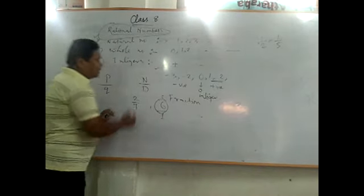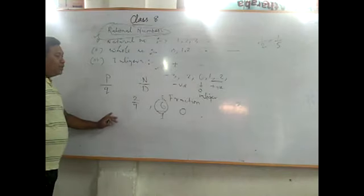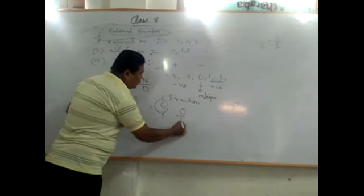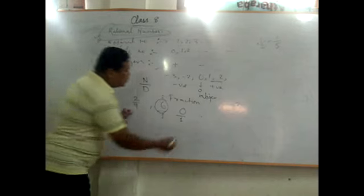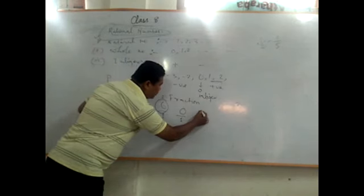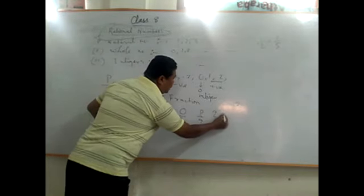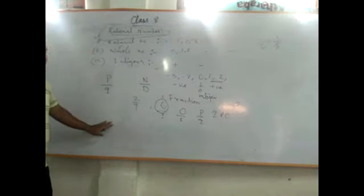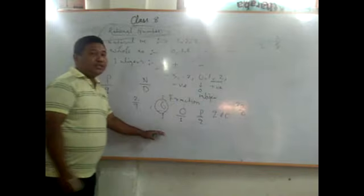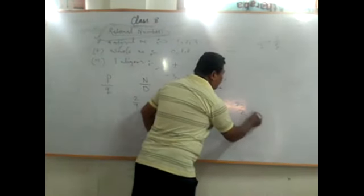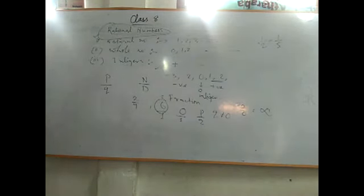Also, 0 is a rational number as we can express it in the form of p by q. However, any number of the form p by q requires that q should not be equal to 0. If q is equal to 0, then, for example, 2 by 0 is not a rational number because 2 by 0 is undefined.